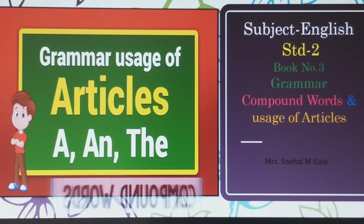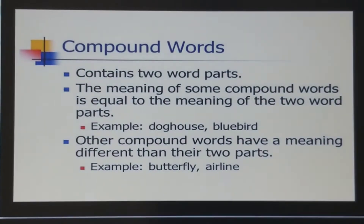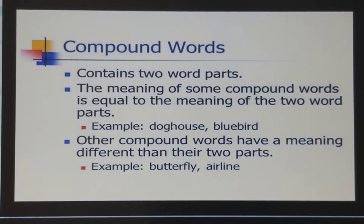First we are going to see compound words. Compound words contain two word parts. The meaning of some compound words is equal to the meaning of the two word parts. For example, dog house and bluebird.